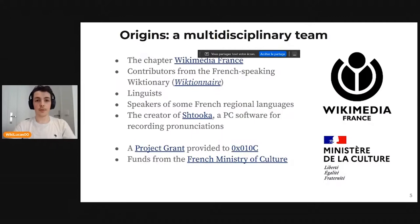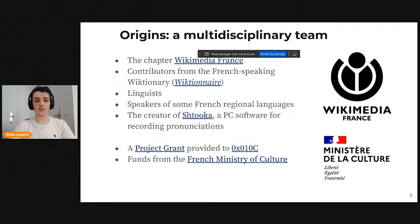It originates from the French chapter, Wikimedia France, and was made with the help of contributors from Wiktionnaire, some linguists and speakers of French regional languages, and Nicolas Vion, the creator of Stuka, which was a PC software made for recording pronunciations. LinguaLibre was founded thanks to a project grant from the foundation provided to Odisee and some funds from the French Ministry of Culture.